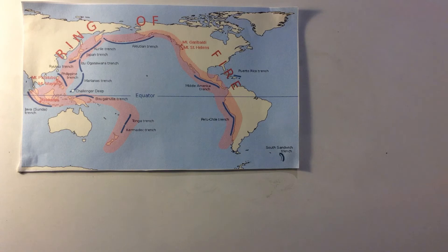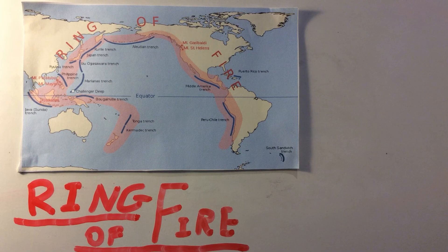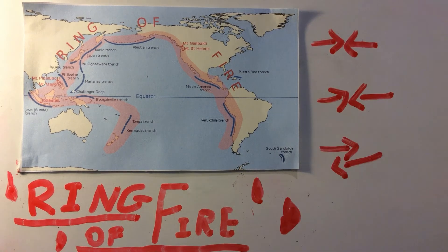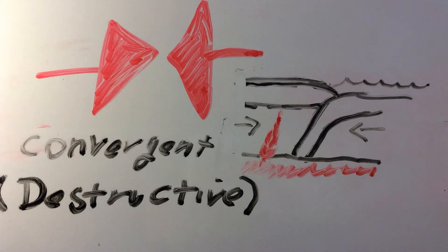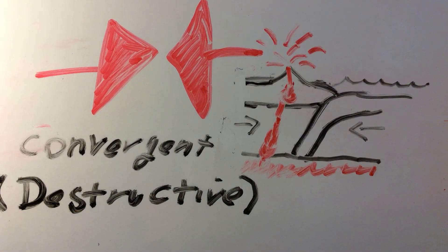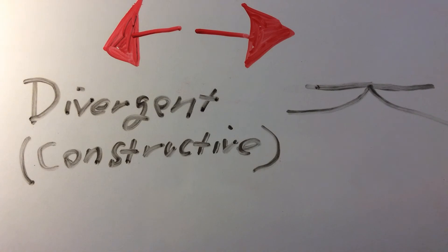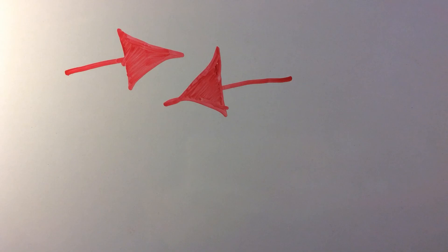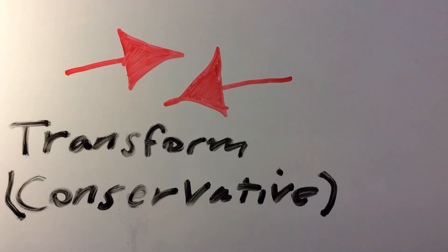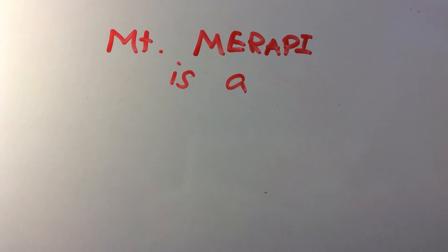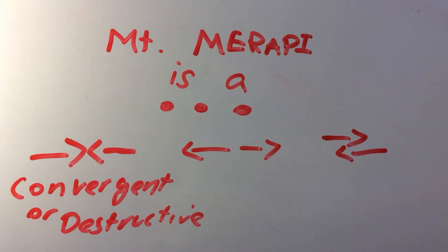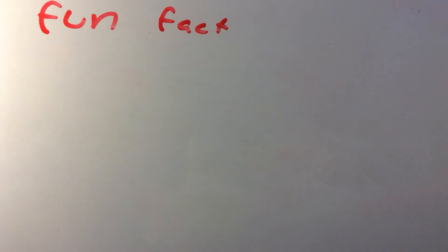Mount Merapi is located on the Ring of Fire, famous because it consists of three main subductive plates, known as the Eurasian, Pacific and Indo-Australian. There are many different types of plate boundaries, such as convergent, i.e. destructive, where one is subducted under the other; divergent, or constructive; and, of course, transform, or conservative. Mount Merapi is a conservative or destructive plate boundary.